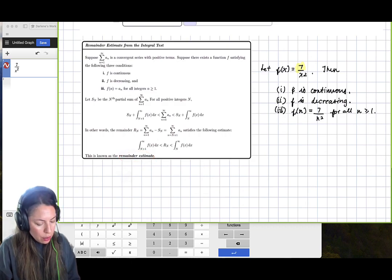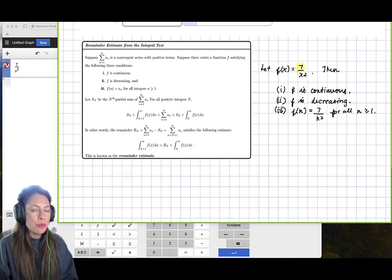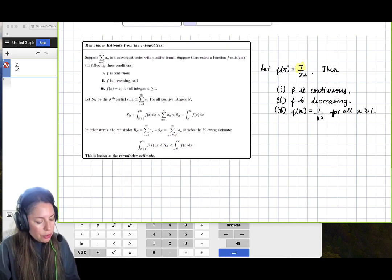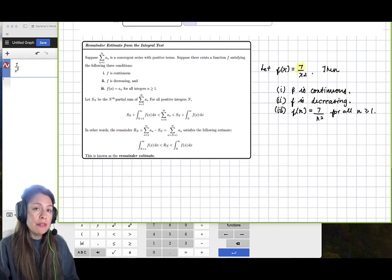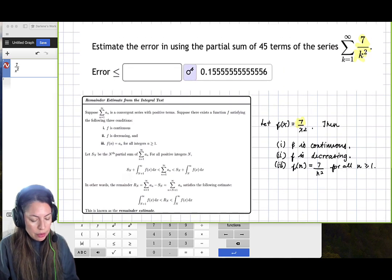The reason why we're using n to infinity is because we're looking at that right side. We're looking for 1 to infinity. And so therefore, we know that r sub n, in our case n is 45 because it's the 45th partial term.